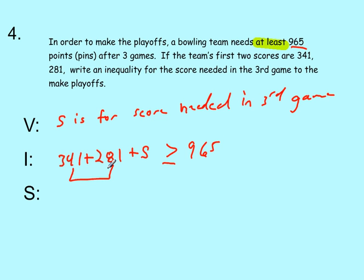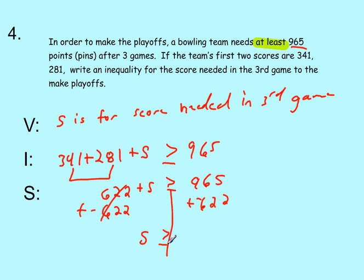We can combine like terms. And 341 plus 281 is 622. So this becomes 622 plus S is greater than or equal to 965. Now we add negative 622 to both sides. So we get these two terms canceled. Those cancel out. So we have S is greater than or equal to 965 plus negative 622. And that's going to be 343. So they need a score of 343 pins on the final game, the third game.